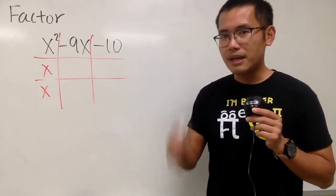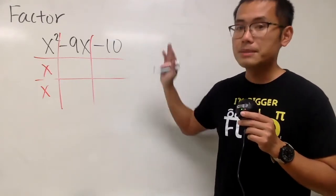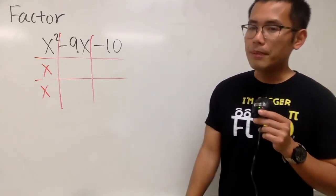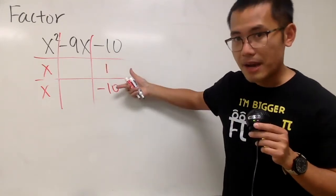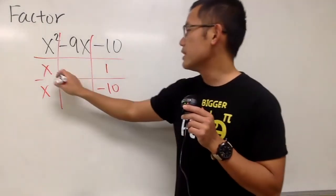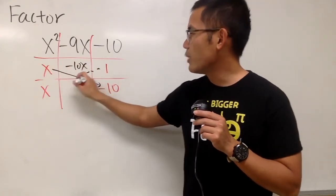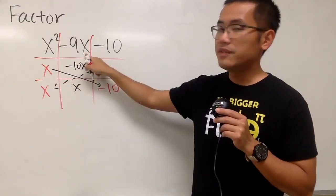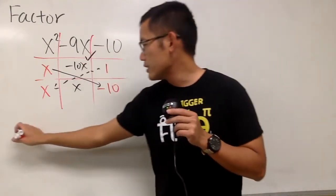You can do negative 2 times positive 5, or positive 2 times negative 5, or negative 1 times positive 10, or negative 10 times positive 1. The correct combination is positive 1 times negative 10. The order here doesn't matter because both diagonals are x. This works because x times negative 10 gives negative 10x, and 1 times x gives positive x. Negative 10x plus x gives negative 9x, so it checks.